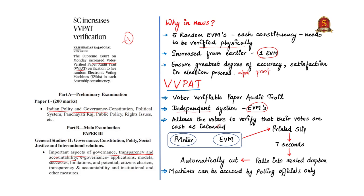If we look at the working of VVPAT, it is a printer attached to the EVM. When a voter presses a button on the EVM, a paper slip is printed through the VVPAT. The slip contains the poll symbol and the name of the candidate, allowing the voter to verify his or her choice. The slip will be available for seven seconds and will then be dropped into the dropbox in the VVPAT machine, and a beep sound will be heard.